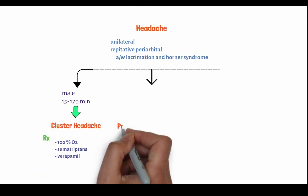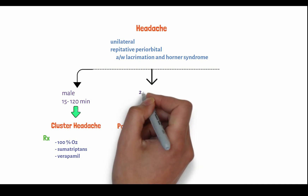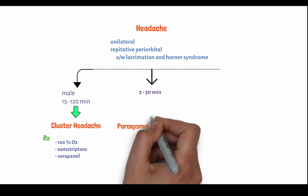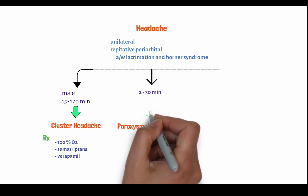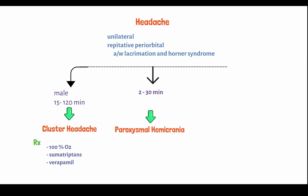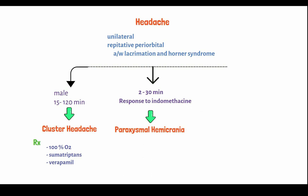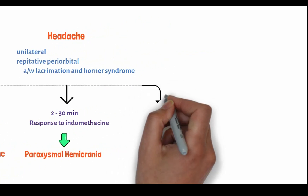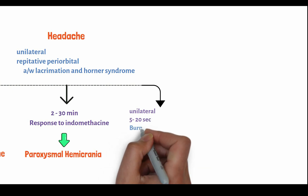The next condition is paroxysmal hemicrania. Here the headache persists for 2 to 30 minutes. It is an extremely painful type of headache characterized by sudden and severe one-sided pain, typically associated with additional symptoms like tearing of eyes, nasal congestion, and restlessness. It usually responds well to indomethacin. So if the duration is 2 to 30 minutes and it responds to indomethacin, that means it is paroxysmal hemicrania.